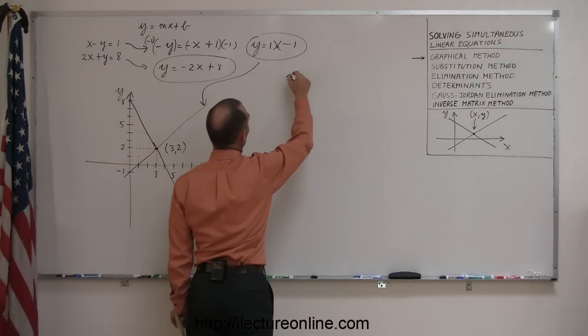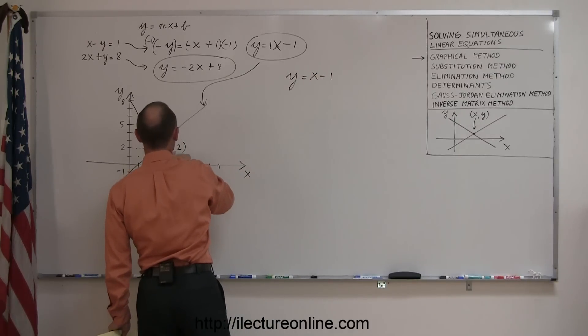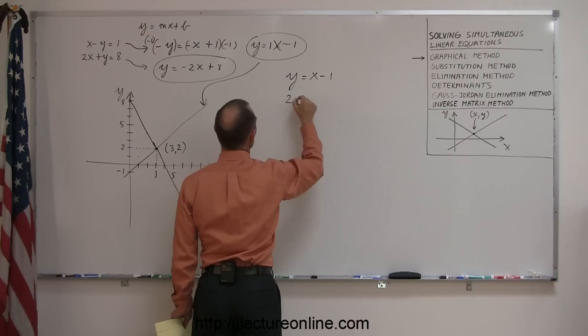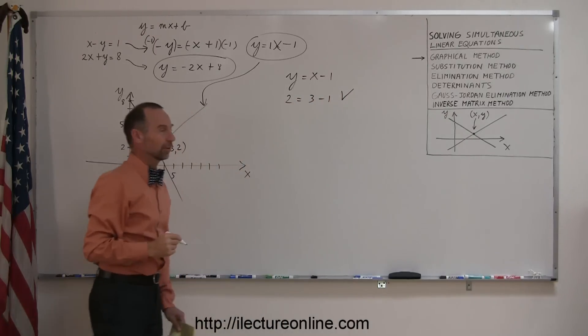So starting with the equation y equals x minus 1, plug in a 3 for x and a 2 for y. So I get 2 equals 3 minus 1. Yep, that looks correct. So that's a good sign.